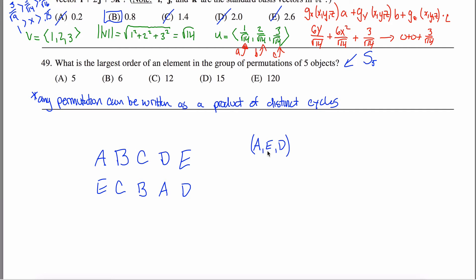Once the first cycle is closed, I open a new one using an element not yet listed — say B. B can't go to A, E, or D since those are already in a closed cycle, so B must go to C. And C goes back to B, giving the 2-cycle (B C). I've now written the permutation as a product of distinct cycles.